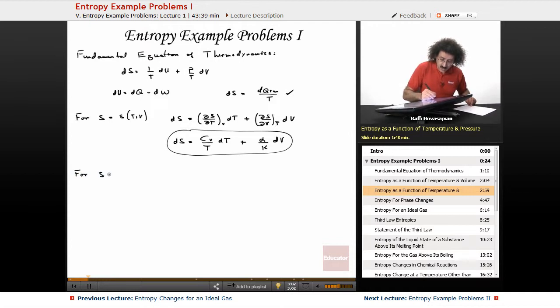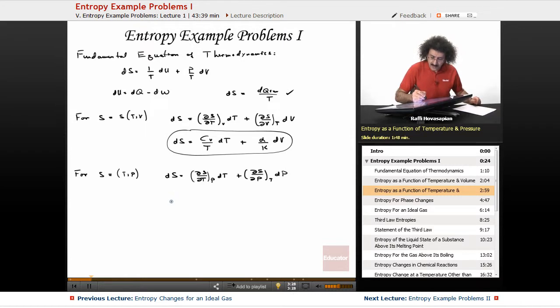Now, in the case of dealing with entropy, where entropy is going to be a function of temperature and pressure. So if pressure is mentioned in the problem, we have ds is equal to ds dt under constant pressure dt plus ds dp under constant temperature dp. And of course, the actual derivation that we did was the following: ds equals Cp over T dt minus volume times the coefficient of thermal expansion times dp. So this is the equation, this is the other one that you want to bring to the table.